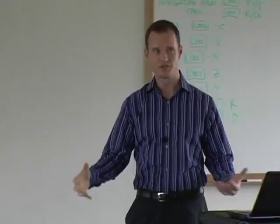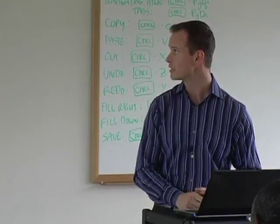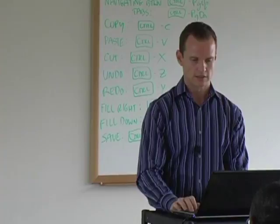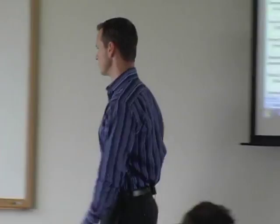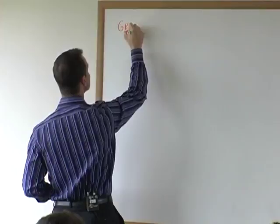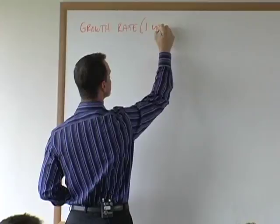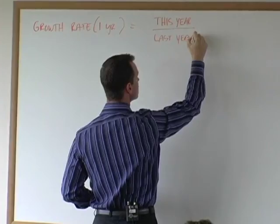Rather than just typing in 5%, we're actually going to calculate it right here — one, to show the client, and two, to make sure we've done the calculation correctly. The formula for each year is equals this year's revenues divided by last year's minus 1. In other words, for year 1, equals H7 divided by G7 minus 1. A one-period growth rate: this year divided by last year minus 1.